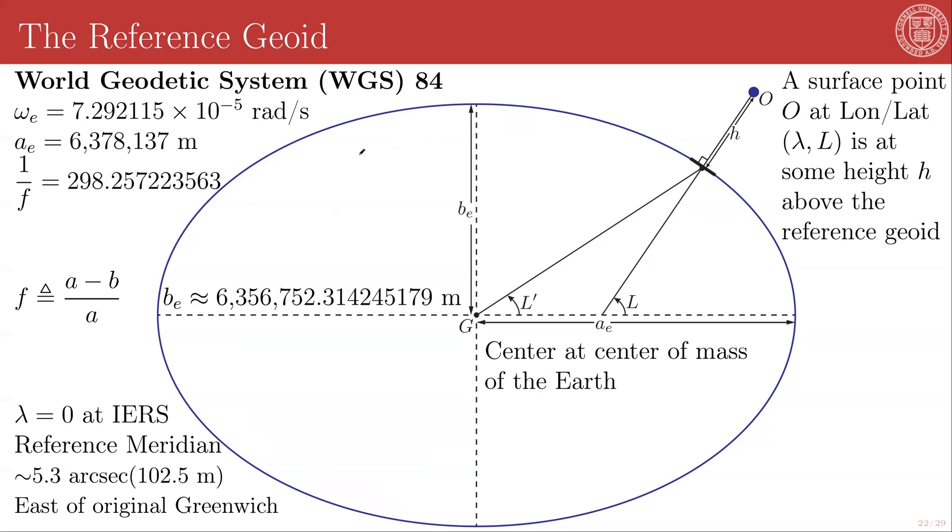And in particular, we will be using the world geodetic system, WGS84 reference ellipsoid, because this is the one that's the basis for the GPS constellation and GPS measurements. This system defines a rotation rate of the Earth, given here as omega E. And this is a definitional quantity. It defines the semi-major axis of this reference ellipsoid, A sub E. And again, this is a definitional quantity. And then it defines the flattening. And the flattening of an ellipse is defined as the semi-major axis minus the semi-minor axis divided by the semi-major axis. So from this, we can calculate the eccentricity of this ellipsoid, which can give us the semi-minor axis. And this is a calculated value, hence the approximate.